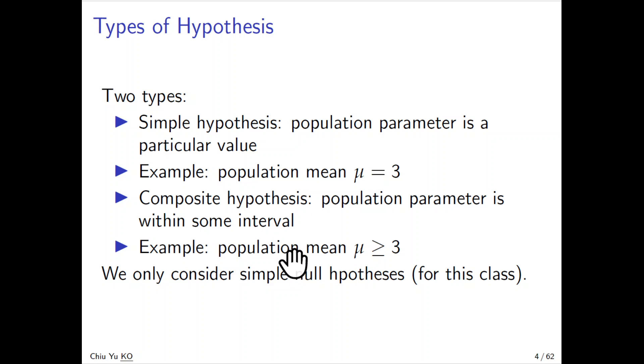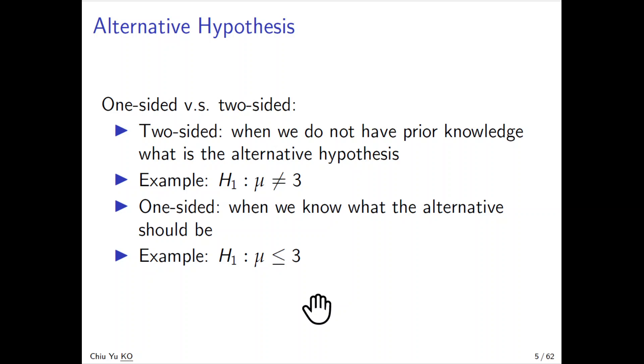We will mostly focus on simple null hypotheses for this class. The alternative hypothesis can be two types. One is called two-sided, which means we don't know if the parameter can be more than or less than the hypothesized value. We say the mean is 3, maybe it's not equal to 3, but we don't know if it's more than 3 or less than 3.